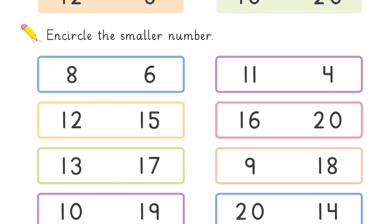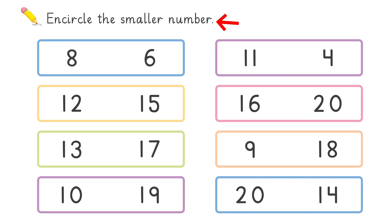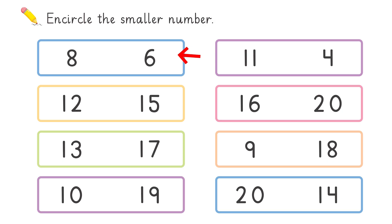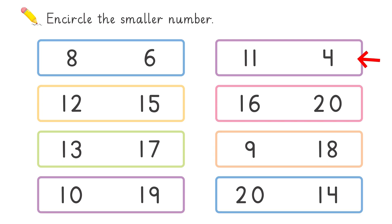In the second question, it says: encircle the smaller number. This is the opposite of what we did in question one — you have to identify the smaller number. Like eight and six: which one is smaller? Six is smaller, so you encircle six. Then in eleven and four, which one is smaller? Four is smaller — encircle that.